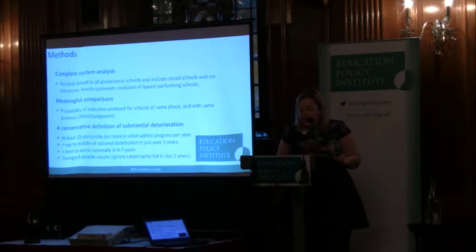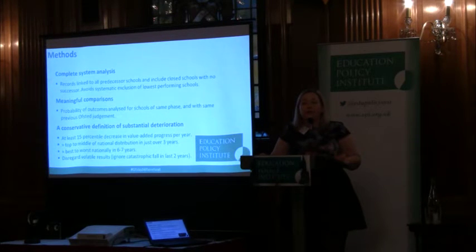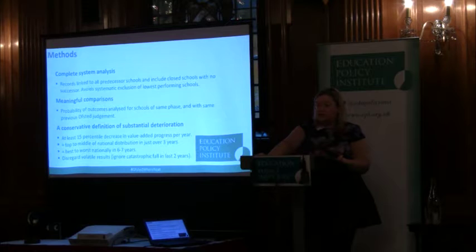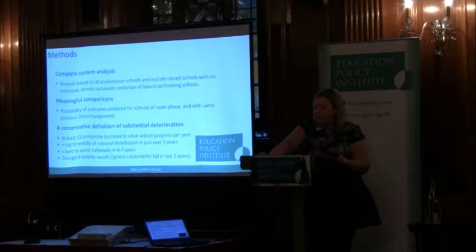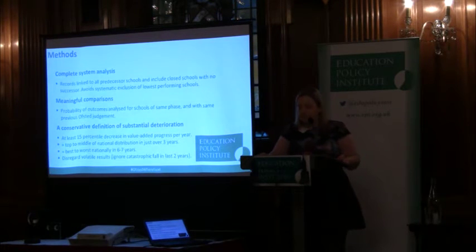When looking at deterioration of schools and how Ofsted responds, we took a conservative definition of deterioration to avoid picking up trivial cases or mere volatility in schools' results over time. We used a method looking at the rank position of schools within the national distribution over time, and defined schools as having deteriorated substantially where they moved at least 15 percentile points downward per year — that is, 15 percentile points per year for each year since their most recent inspection.